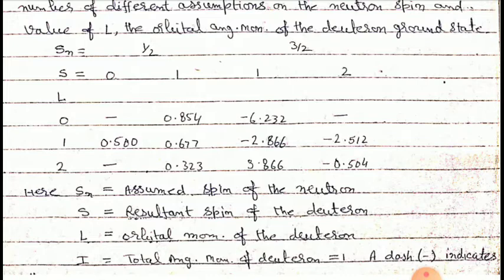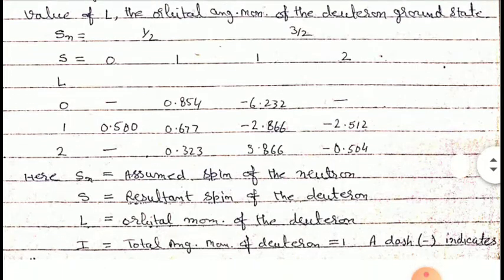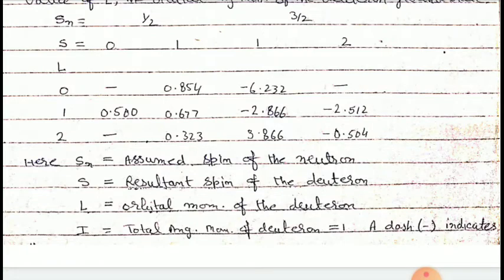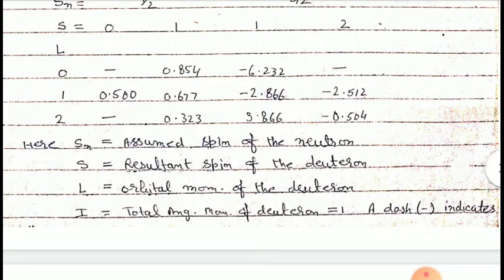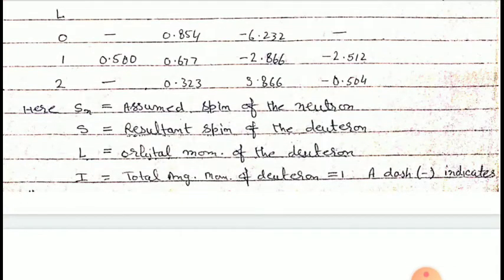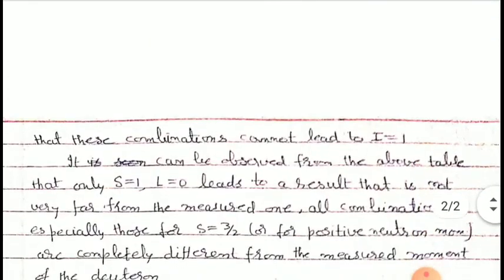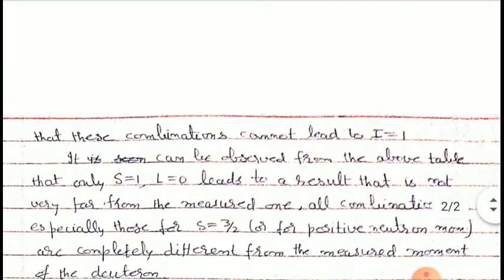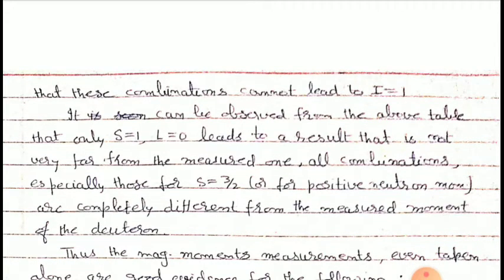Similarly, if we consider L equal to two, we get three values of magnetic moments of the deuteron. Here, S_n is the assumed spin of the neutron, S is the resultant spin, capital L is the orbital momentum, and I is the total angular momentum equal to one. A dash indicates that the combination cannot lead to I equal to one. From the table, only S equal to one and L equal to zero leads to a result that is not very far from the measured value.